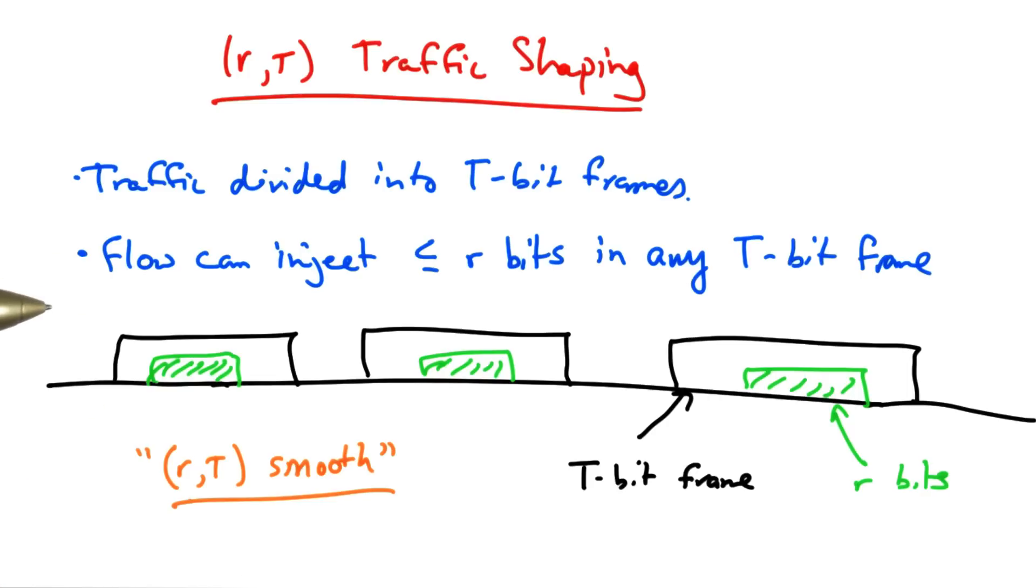In the case of RT smooth traffic shaping, one cannot send a packet that's larger than R bits long. Unless T is very long, the maximum packet size may be very small, so the range of behaviors is typically limited to fixed rate flows.